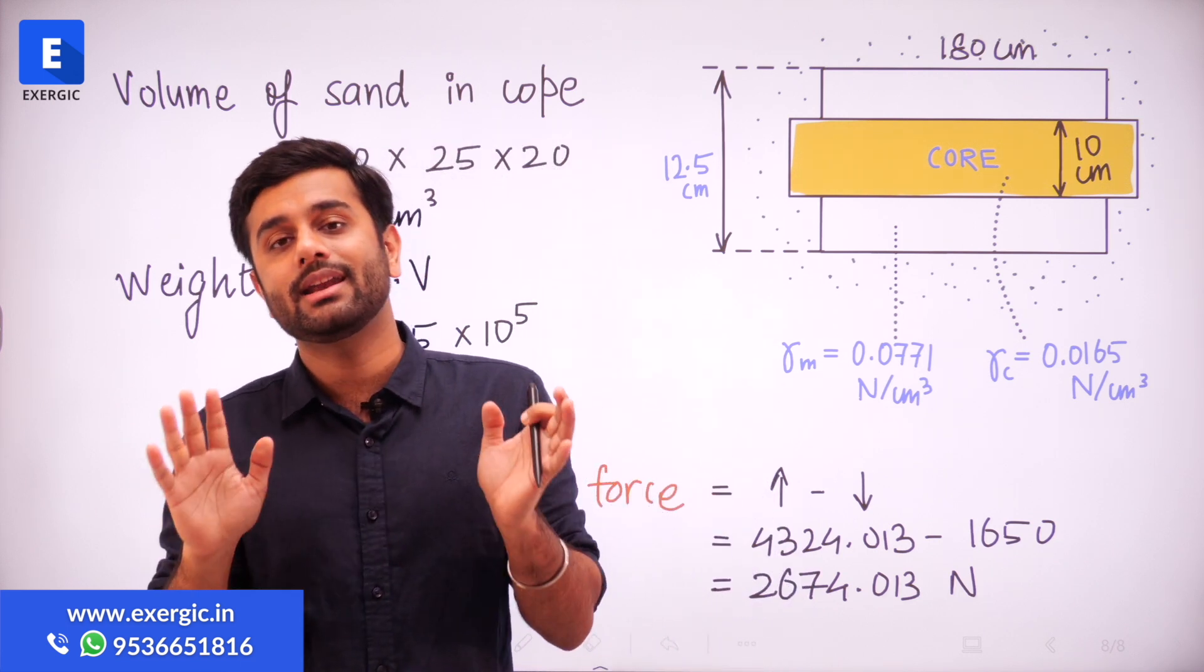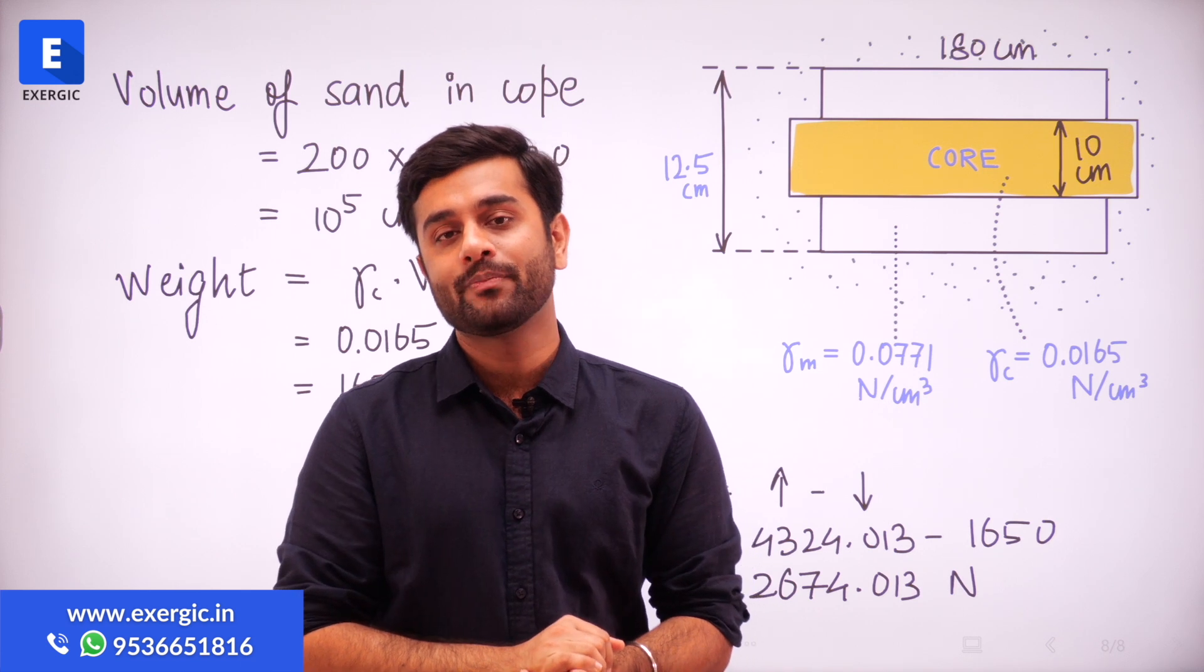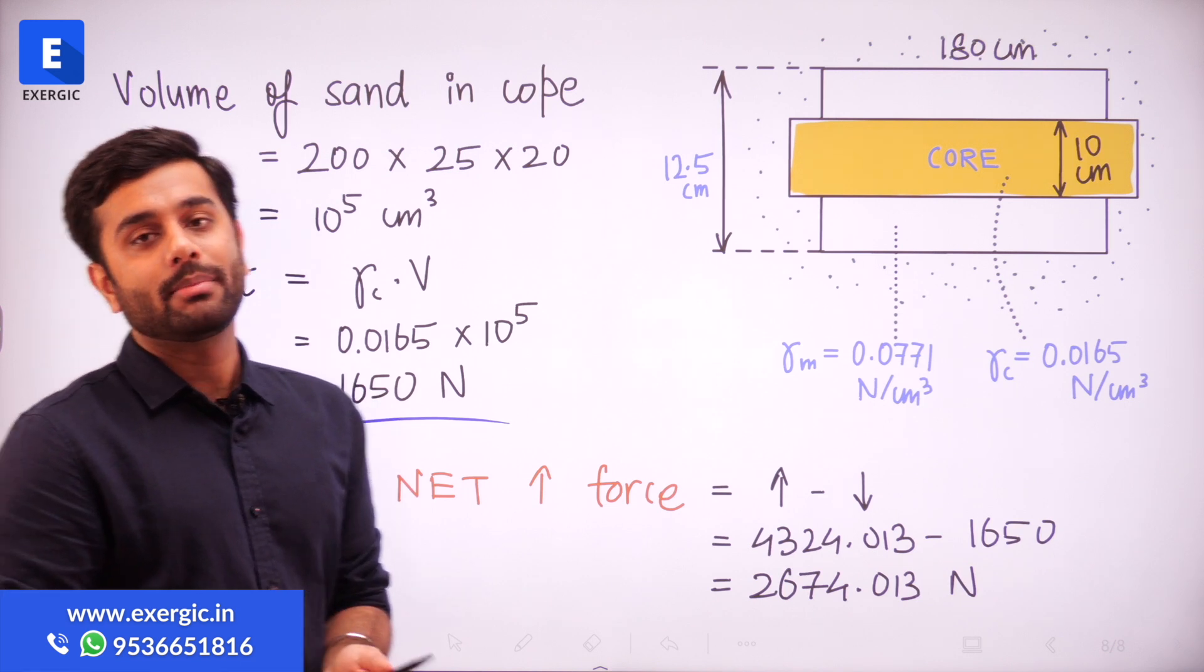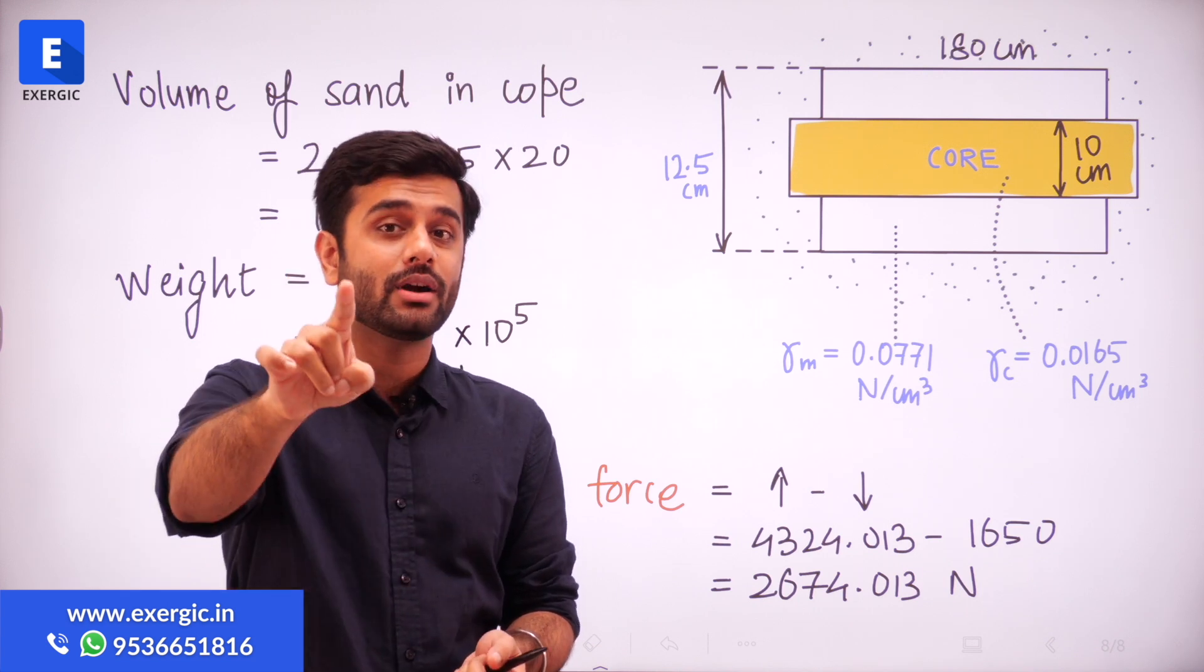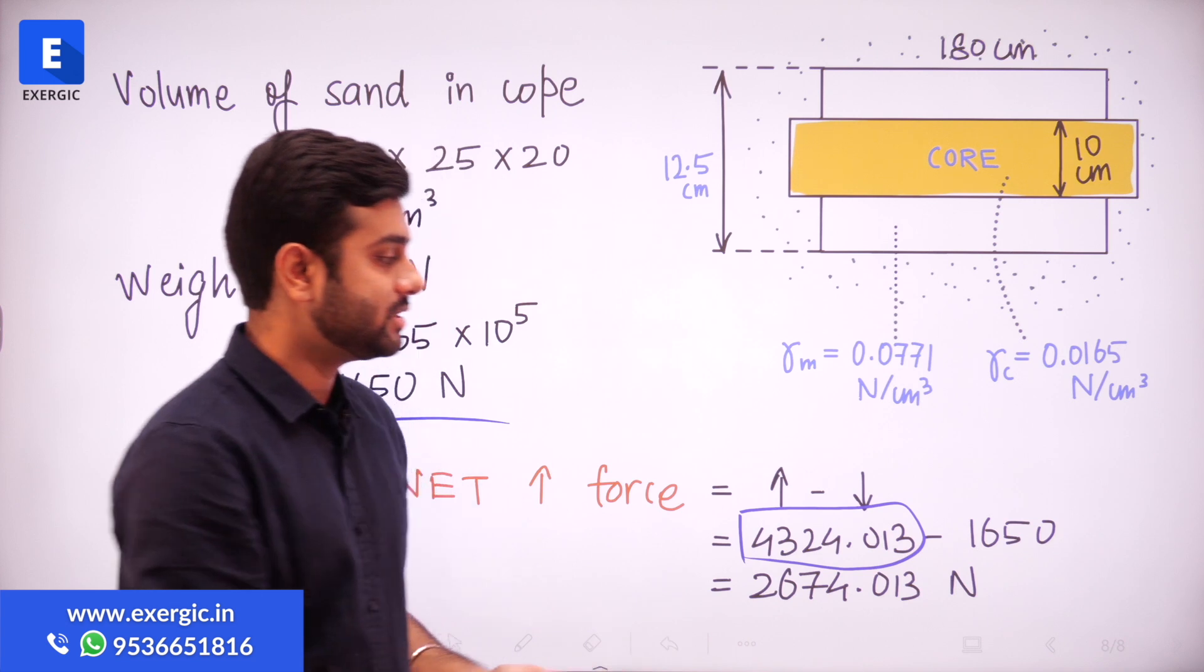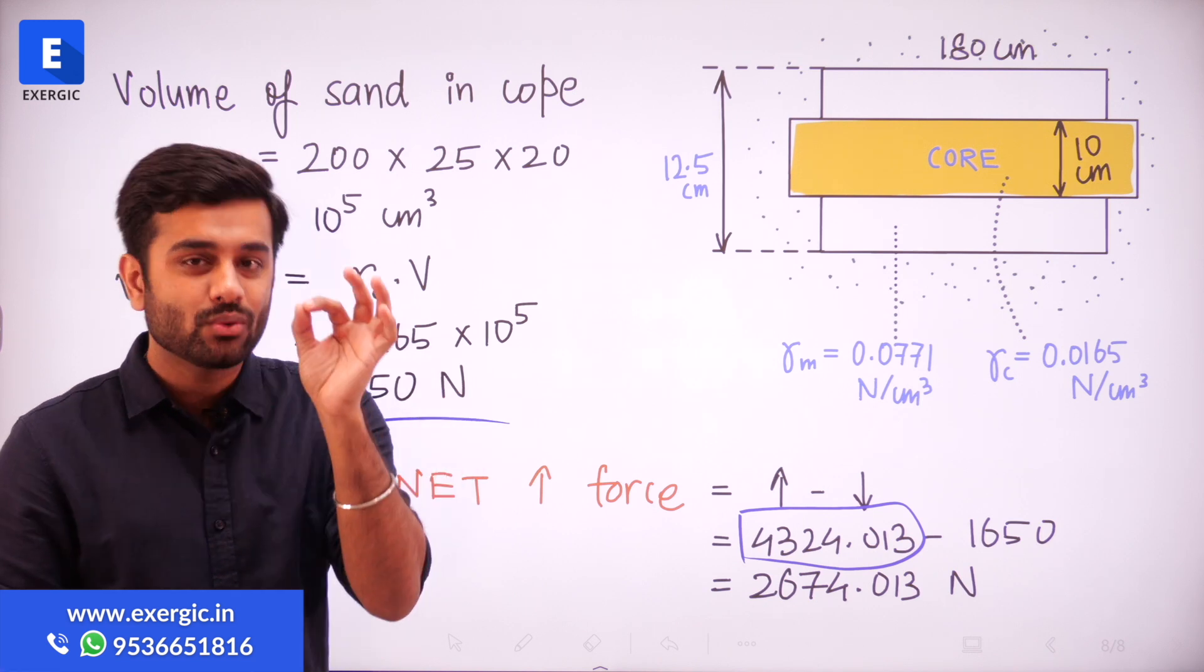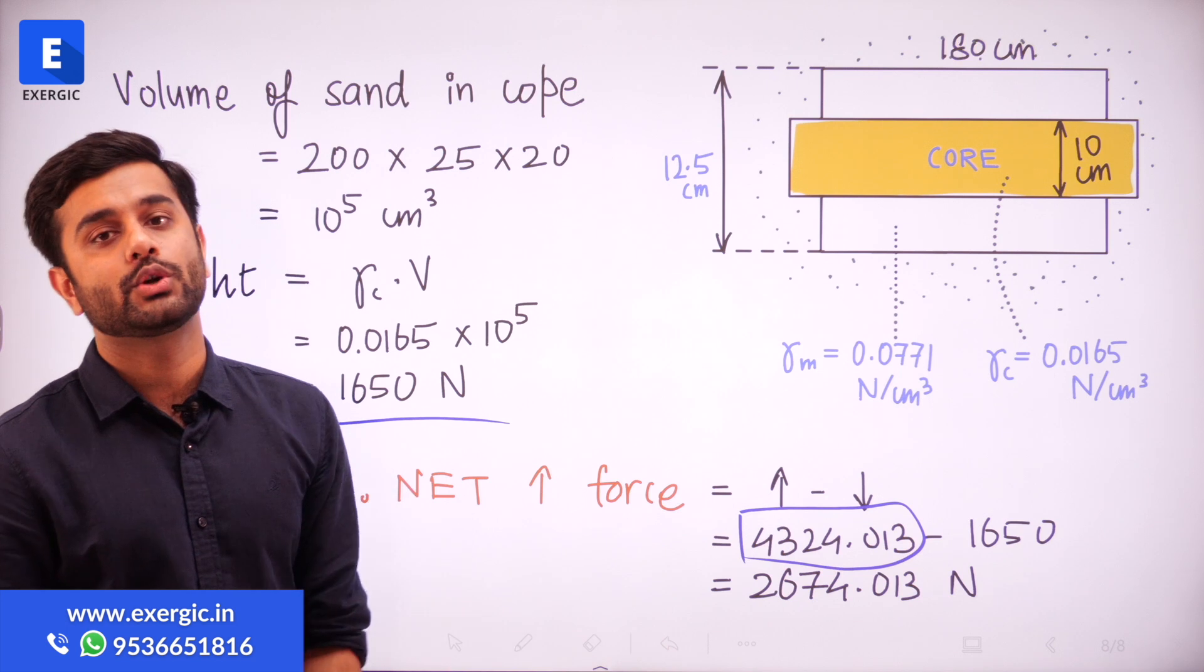In that situation, you do not need any extra weight. For example, the question that I am discussing right now, the weight of the cope here is coming out to be 1650 Newton. But the metallostatic force, net metallostatic force in the upward direction came out to be 4324.013. Obviously, this value is higher. So net upward force acting is higher. You need to balance that by putting the extra weight. So take the difference of the two.